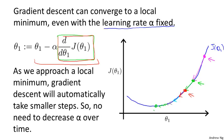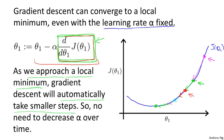Just to recap: in gradient descent, as we approach a local minimum, gradient descent will automatically take smaller steps. That's because as we approach the local minimum, the derivative gets closer and closer to zero — so gradient descent automatically takes smaller steps. There's actually no need to decrease alpha over time.